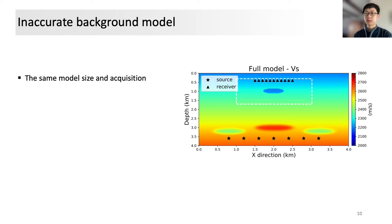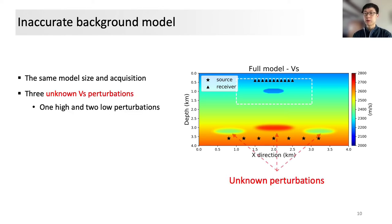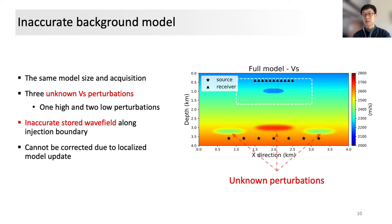In the second experiment, we keep the same model size and acquisition geometries. Besides the real perturbations within the dashed squares, we add three unknown S-wave perturbations indicated by the arrows. These unknown perturbations do not exist during the first full model simulation. That is to say the stored boundary wavefield and the subsequent local simulations may be inaccurate. Apart from that, those unknown perturbations during the localized inversion can't be corrected since the model updates are merely allowed within the target region.